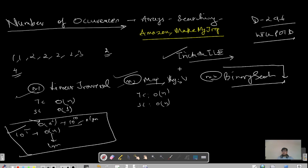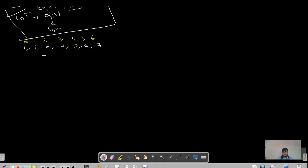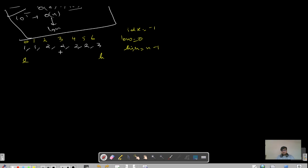So how does binary search work? Let's say we have elements: 1, 1, 2, 2, 2, 3. We initialize a low pointer to 0 and a high pointer to n-1 (the last element). We maintain an answer index initialized to -1. Then we find the middle element: mid = (low + high) / 2. If low is 0 and high is 6, then mid = 3. We run the binary search while low <= high.